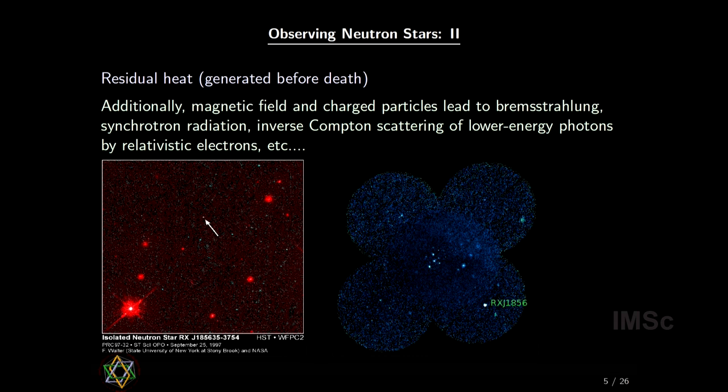But you might ask: why do neutron stars emit at all, since they are dead stars? There are a few reasons. First, once upon their lifetime they were alive — there was nuclear fusion and heat — so they are still warm and keep emitting residual heat. Second, as I said, they are very strong magnets, so there are high-energy particle physics phenomena like Bremsstrahlung effect, synchrotron radiation, and inverse Compton mechanism — because of those, they emit electromagnetic waves.